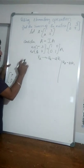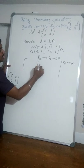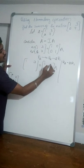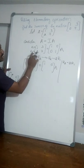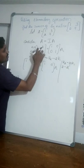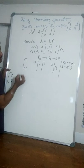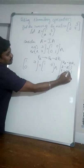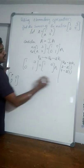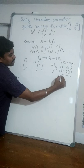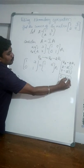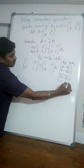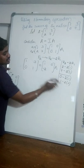The first row elements remain as they are: 1, 3 on the left and 1, 0 on the right. For row 2: second row first element is 2 minus 2 times row 1 element 1, so 2 minus 2 is 0. Second row second element is 7 minus 2 times row 1 element 3. Two 3s are 6; 7 minus 6 is 1. On the right side: row 2 element 0 minus 2 times row 1 element 1 gives minus 2. Row 2 element 1 minus 2 times row 1 element 0 gives 1.